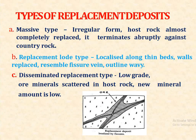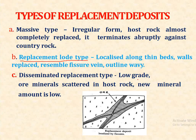There are three types of replacement deposits. First, massive deposits — these are irregular in form, the host rock is almost completely replaced, and it terminates abruptly against country rocks. Second, replacement lode type deposits — these are localized along thin beds and all replaced zones resemble fissure vein outlines. Third, disseminated replacement type — these are of low-grade ore mineral scattered in the host rock, and the amount of new minerals is very low.